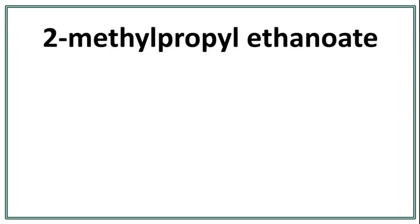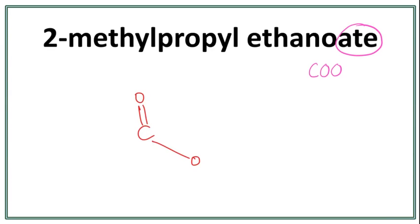Let's draw the structure for 2-methylpropyl ethanoate. This is an ester. An ester has two parts: one is the parent chain from the carboxylic acid, and the other part is the side chain from the alcohol. In the parent chain, we have an 'ate' at the end, which tells us this is an ester and that we have a functional group of COO — carbon having a double bond with this oxygen, and carbon having a single bond with this second oxygen right here.